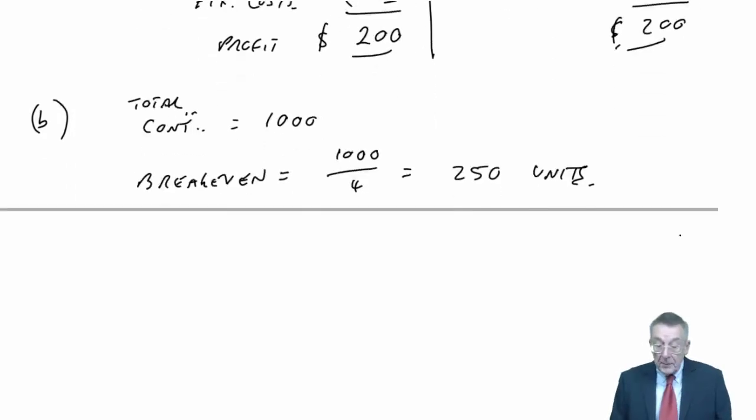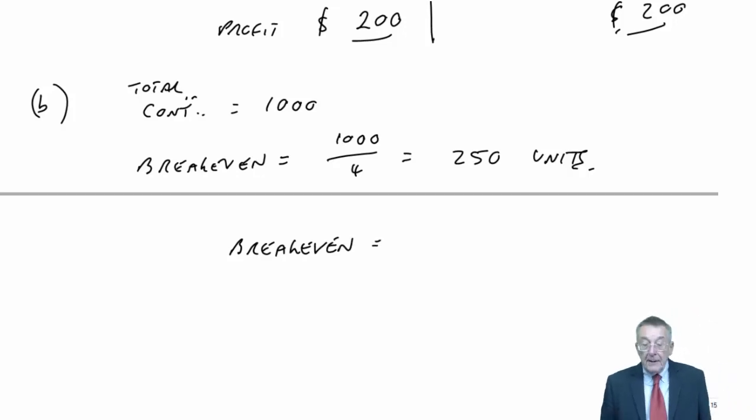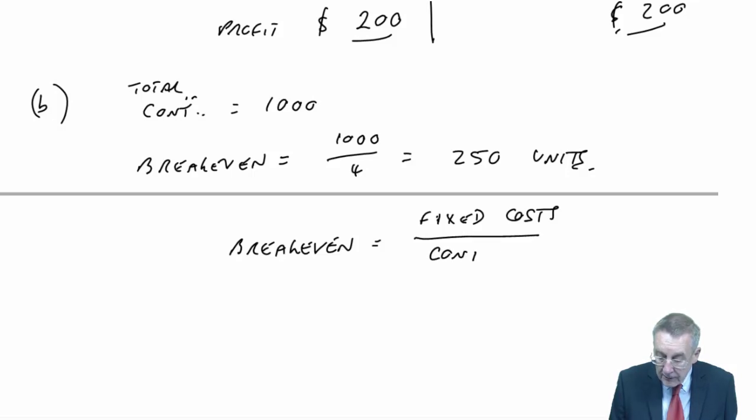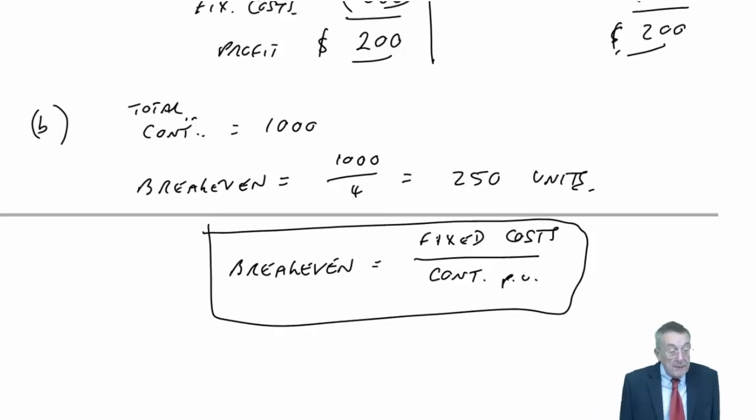Or, if you wanted a formula, the break-even in units equals the fixed costs divided by the contribution per unit. No problem there.